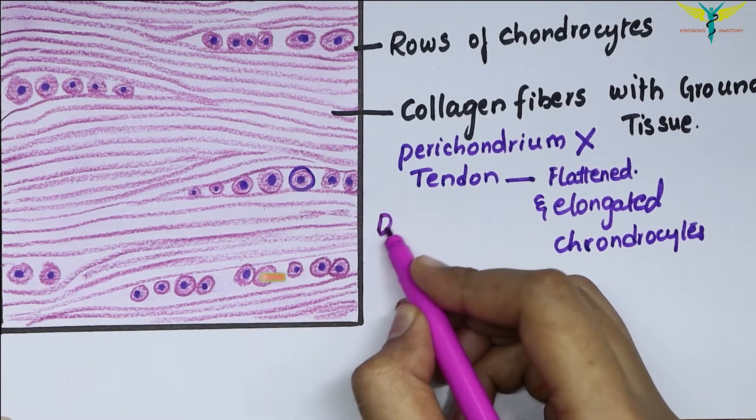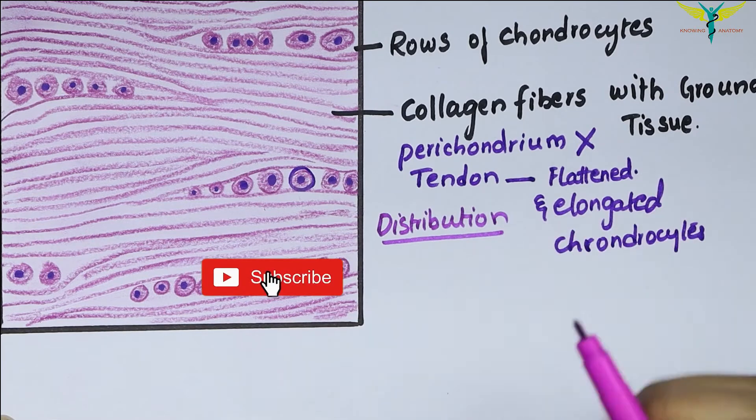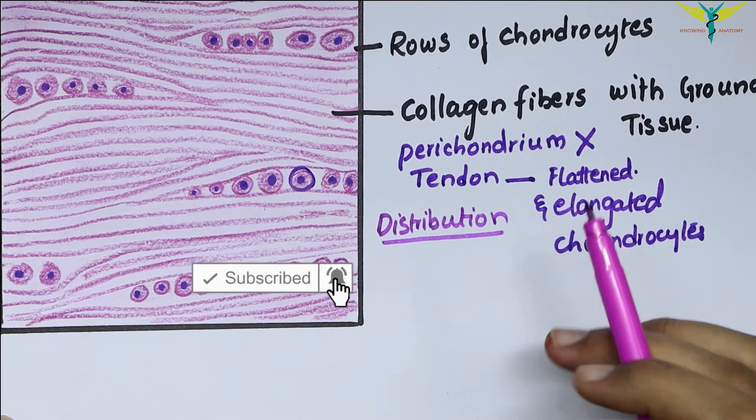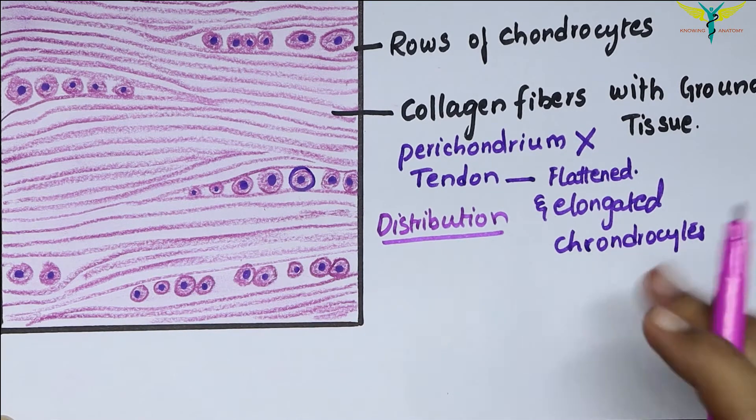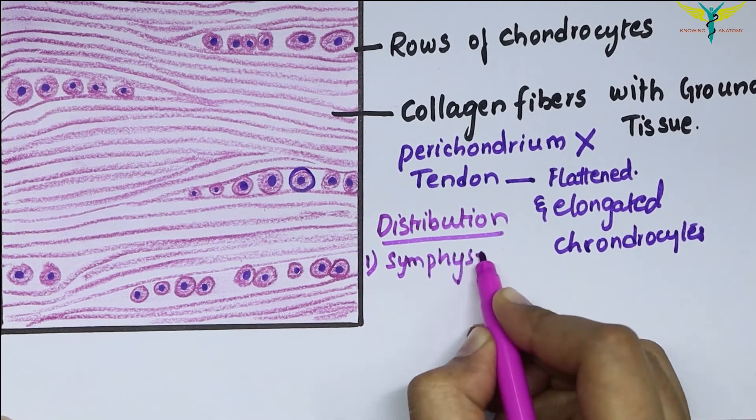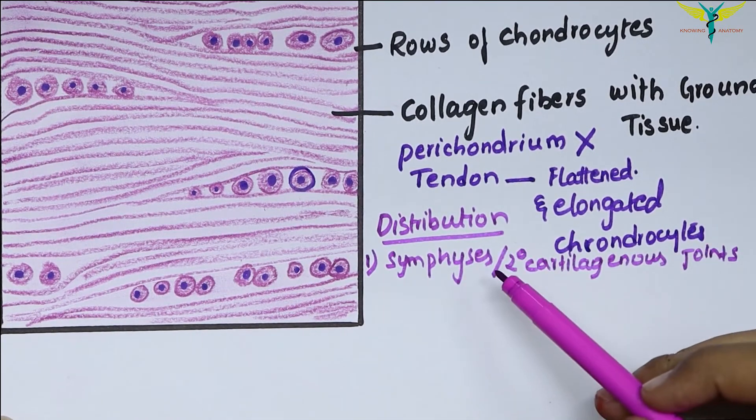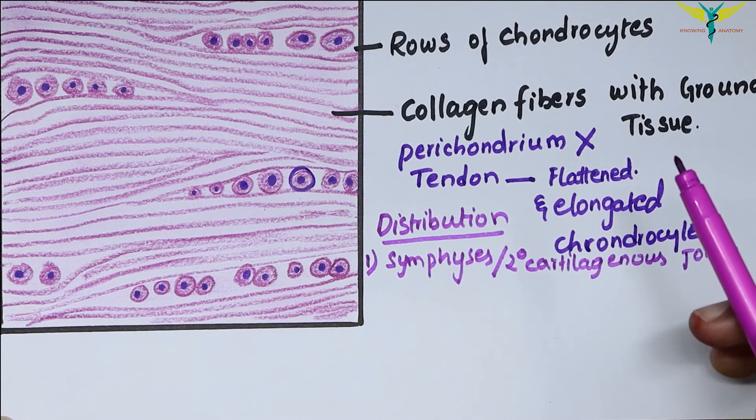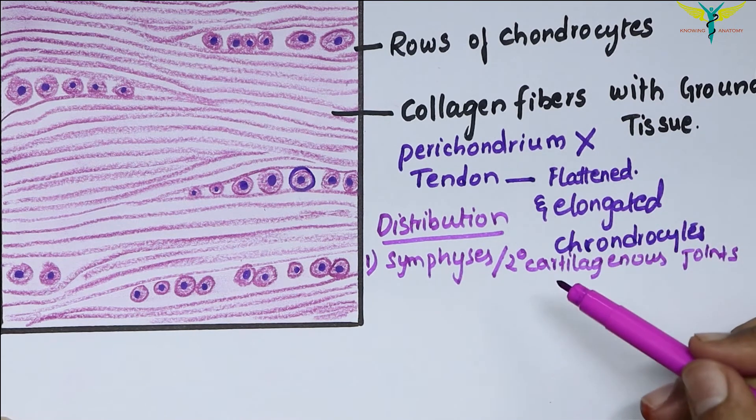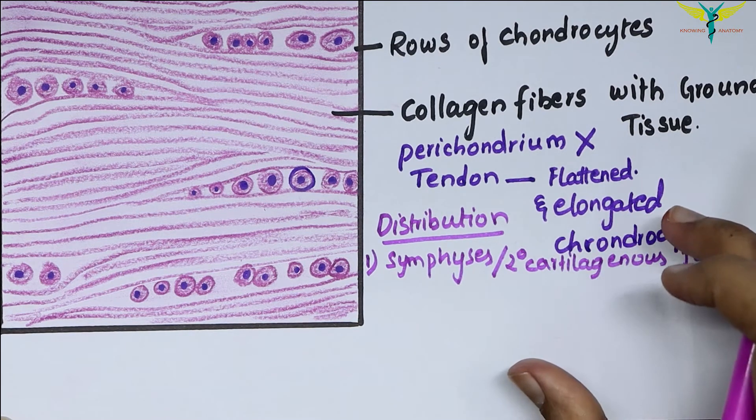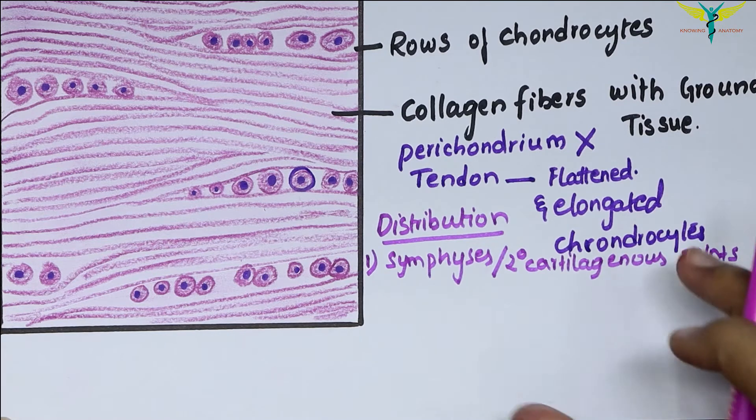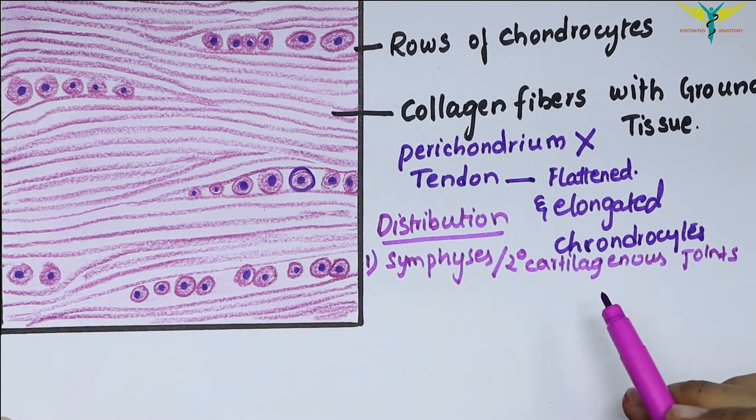Regarding distribution and location, fibrocartilage is mostly found in secondary cartilaginous joints or symphysis. This symphysis includes the joints of the vertebrae between the body of vertebrae, where this cartilage forms the intervertebral disc, the pubic symphysis, and the manubriosternal joint.